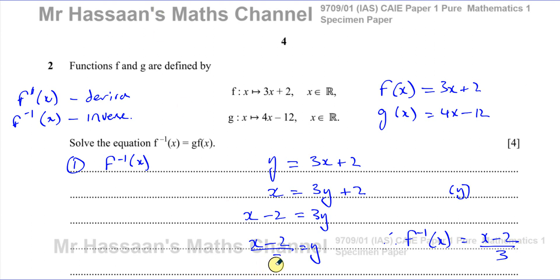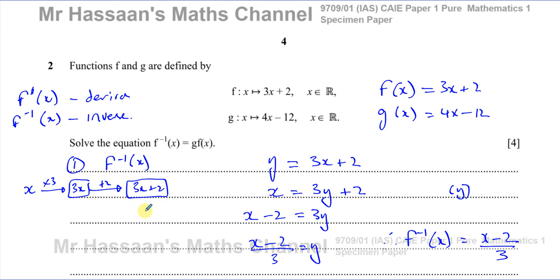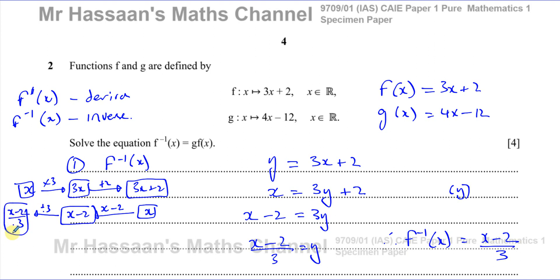You can also use a flow chart method. Starting with x, first multiply by 3 to get 3x, then add 2 to end up with 3x plus 2 — that's the original function. For the inverse, go in the opposite direction with opposite operations: start from x, subtract 2 to get x minus 2, then divide by 3 to get x minus 2 over 3. That's the inverse function — doing the inverse operations in the opposite direction.